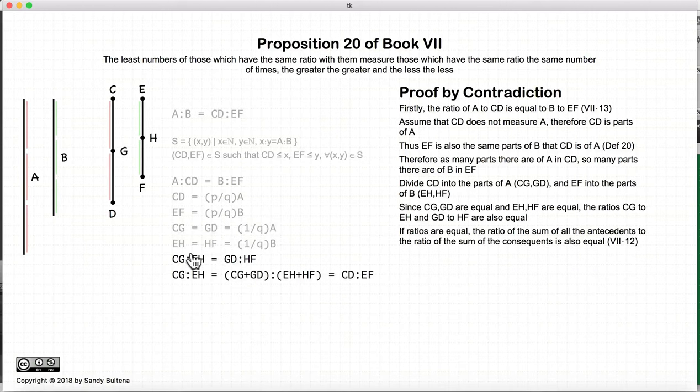Now if CG to EH is equal to GD to HF, then according to Proposition 12, we can add CG and GD and EH and HF, and the resulting numbers will also have the same ratio. So we have the ratio of CG to EH is equal to CD to EH is equal to CD to EF.